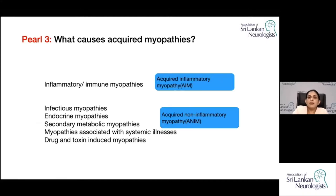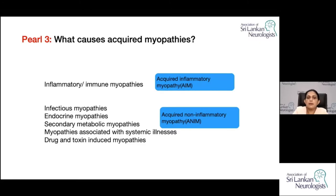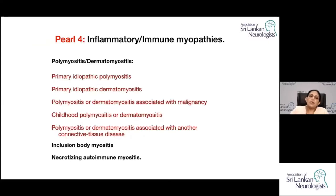The causes of acquired myopathies are either inflammatory or non-inflammatory. Inflammatory myopathies are always dealt with carefully because they are always treatable, and once you recognize the entity, there are many associations to look for in these patients. Acquired non-inflammatory myopathies are mostly treatable and reversible — including infectious, endocrine, and secondary metabolic myopathies, myopathies associated with systemic illnesses, and drug- and toxin-induced myopathies. I will cover inflammatory myopathies in detail because they are treatable and require screening for several other conditions.